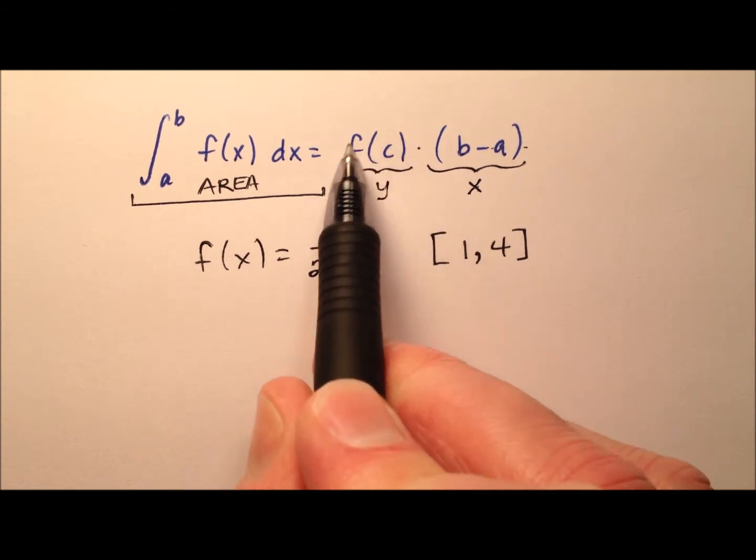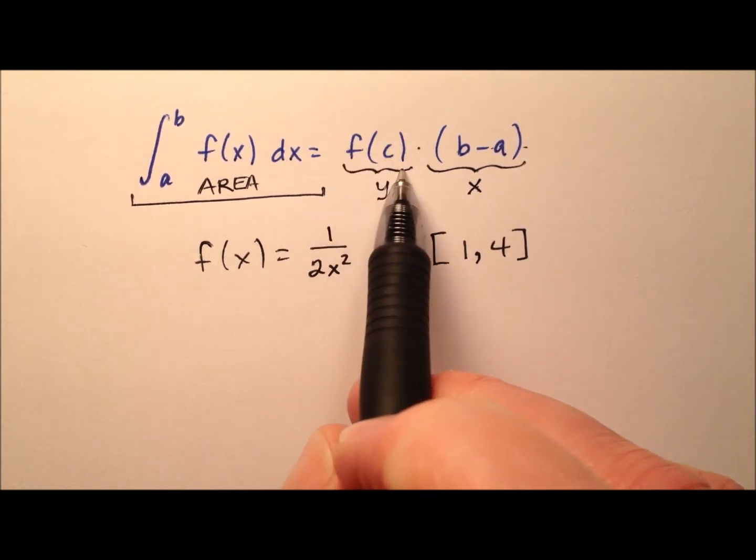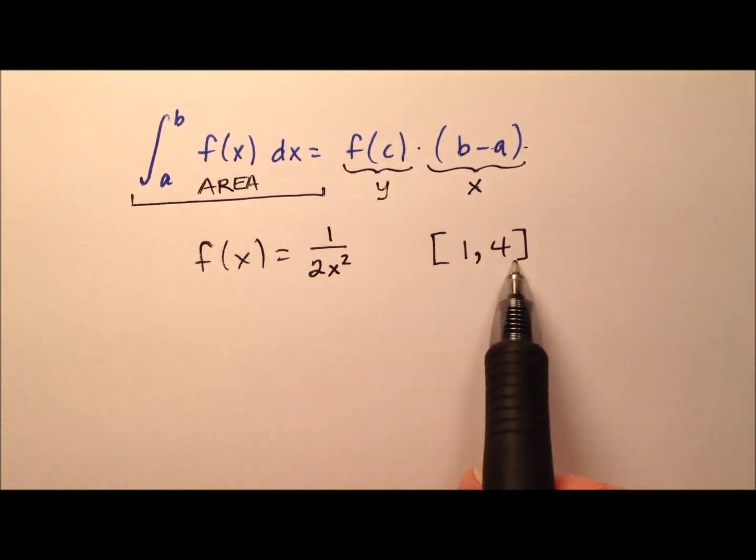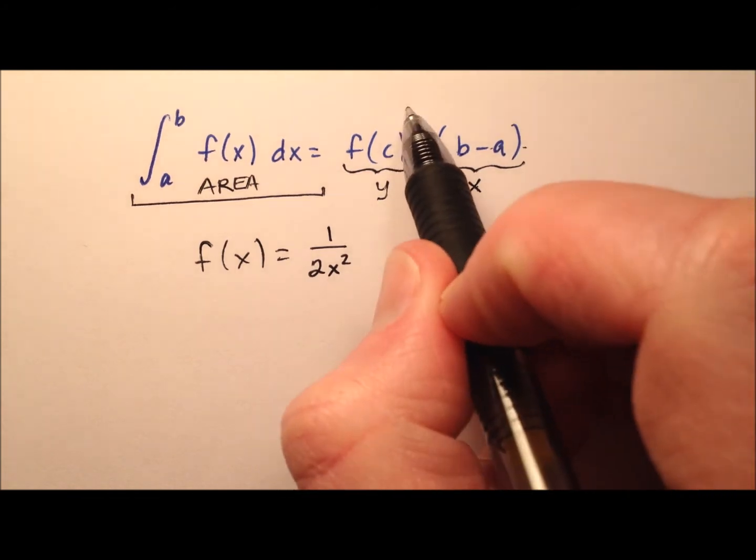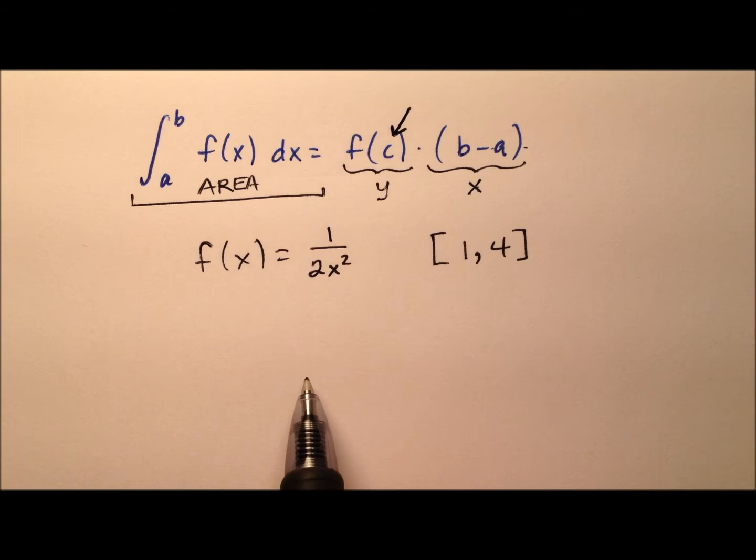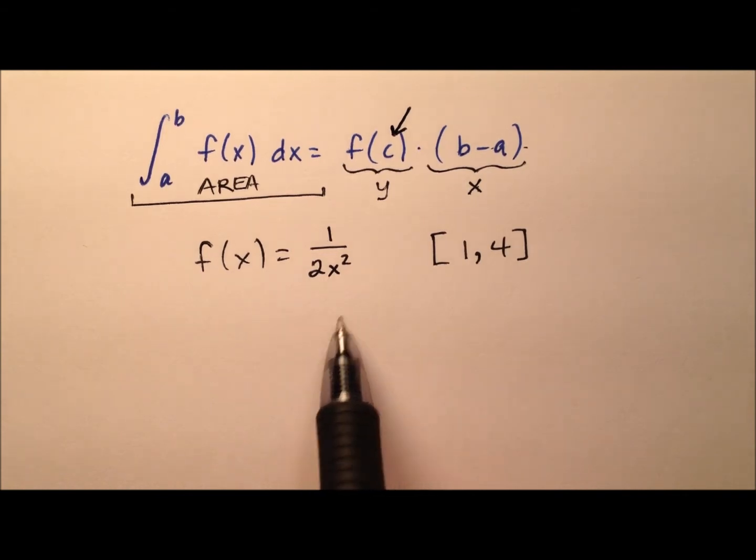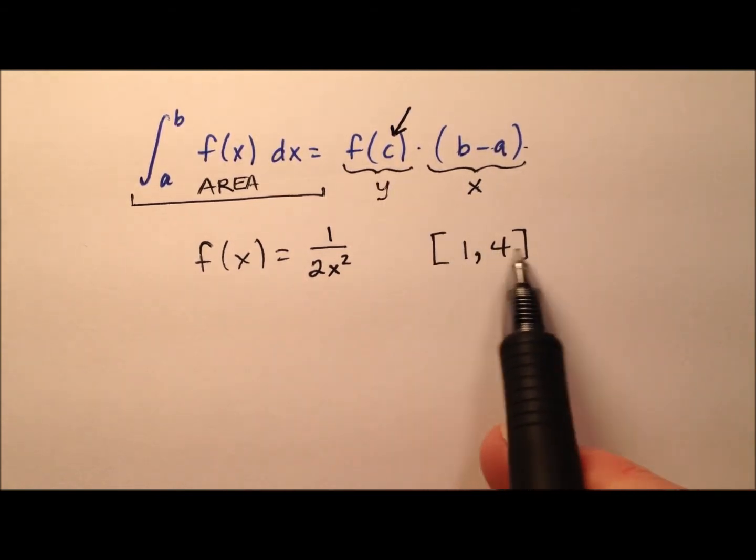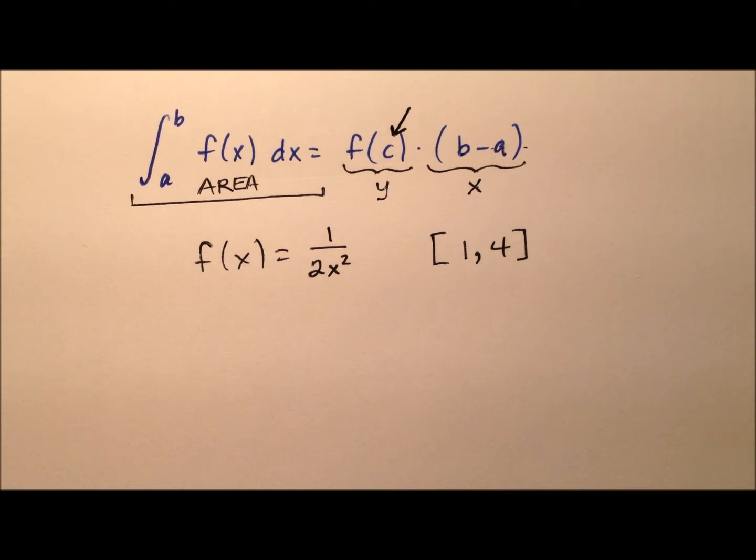And this y value here, this f of c is actually the average value of the function over this region. And the mean value theorem guarantees the existence of some c value, which is going to play as an x value. And this c value is somewhere in this region, that's what we're going to be looking for.